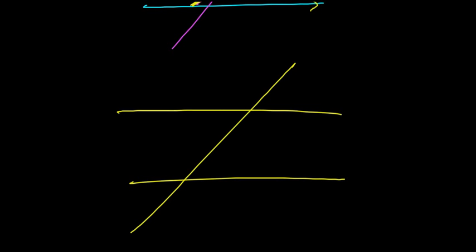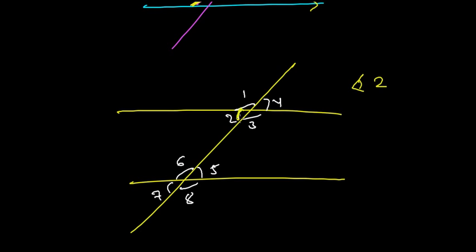Here you need to find out which are the alternate interior angles. I'm giving names to all angles: 1, 2, 3, 4, 5, 6, 7, 8. Pause the video and find out which alternate interior angles are equal. The alternate interior angles are: angle 2 equals angle 5, and another alternate interior angle pair is angle 3 equals angle 6.